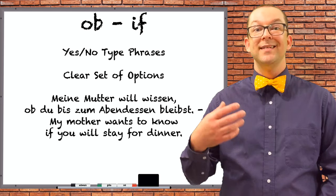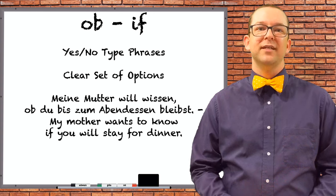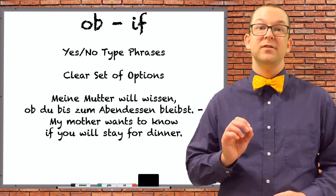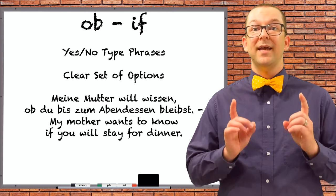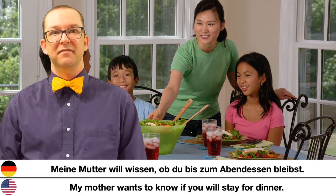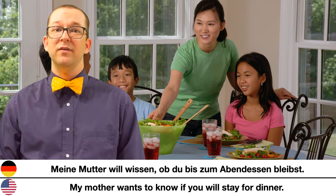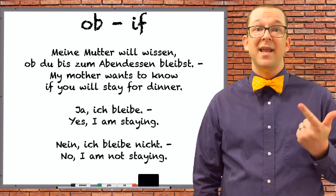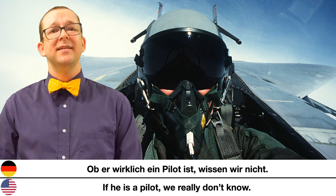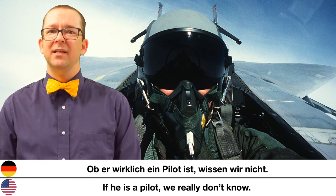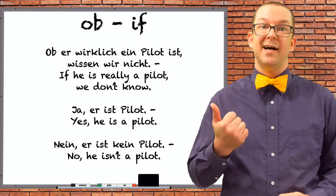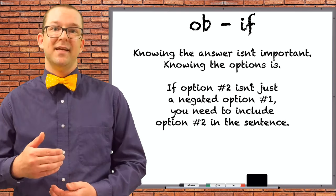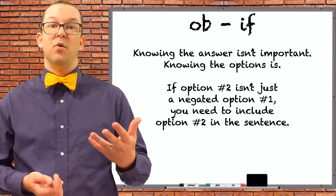Next is ob, another conjunction that translates as 'if,' but unlike wenn, ob can only be used with yes-no type phrases — where there are only a clear set of options. For example: 'Meine Mutter will wissen, ob du bis zum Abendessen bleibst.' — My mother wants to know if you will stay for dinner. The response is either yes or no. 'Ob er wirklich ein Pilot ist, wissen wir nicht.' — If he is really a pilot, we don't know. We don't need to know the answer or list both options in order to use ob.